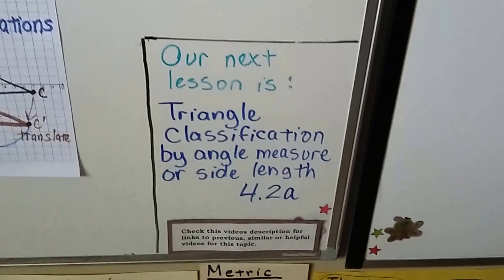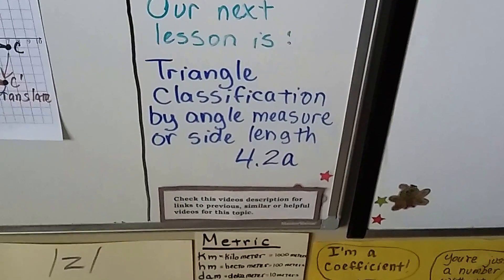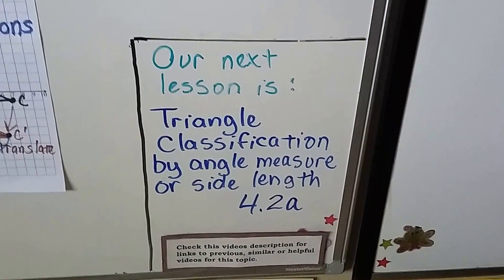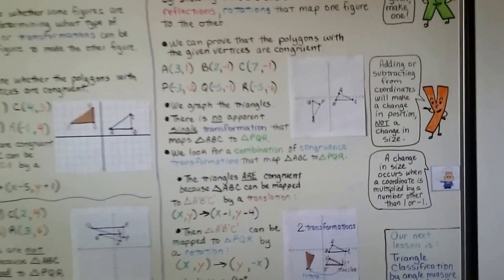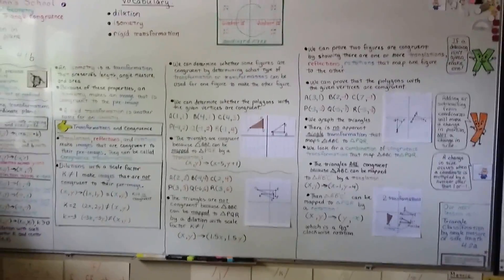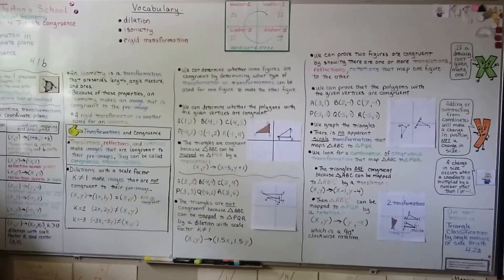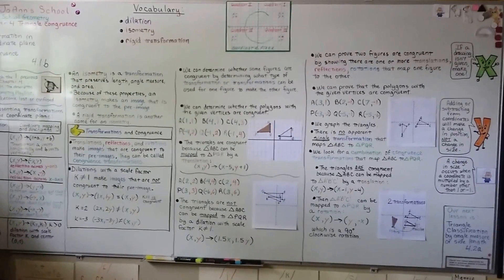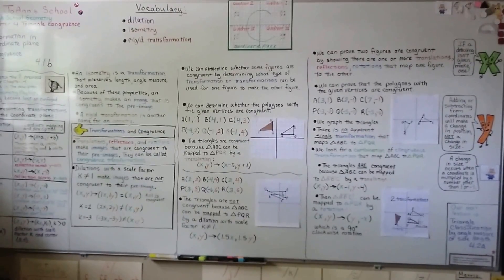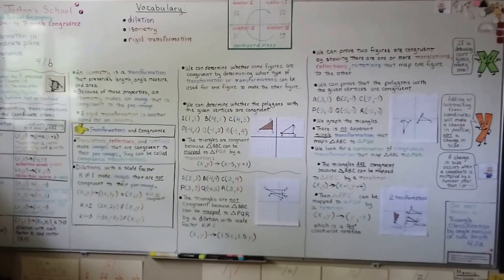Our next lesson is triangle classification by angle measure or side length. That will be 4.2a. So I hope you're doing well. I'm proud of everybody who watches math videos on YouTube. It says a lot about your character, that you're trying to improve yourself. And I hope you have a great day. And hit the like button if you can for me. That'll help me out. Bye.